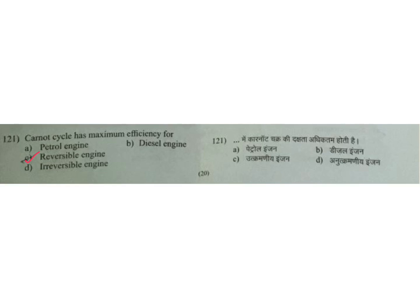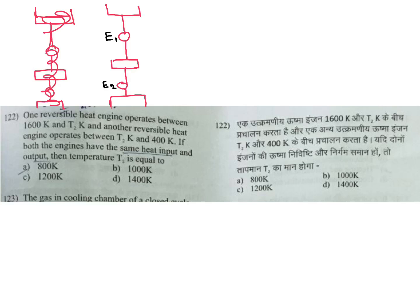A reversible heat engine operates between T1 = 1600 K and T2 K. Another reversible heat engine operates between T2 and 400 K. If both engines have the same heat input and output, then temperature T2 equals how much? This type of question has been solved many times — it is asked in ISRO and other exams. Directly you can solve: T2 = root over (1600 into 400).